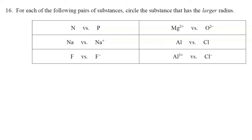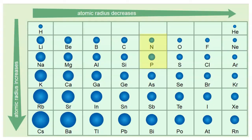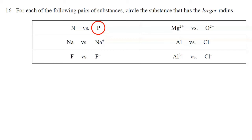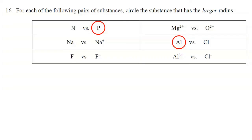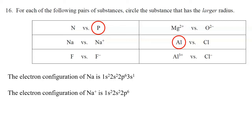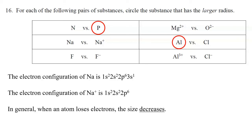Question sixteen asks us to circle the substance with the larger radius in each pair. Nitrogen versus phosphorus: they are in the same group, and atomic radius increases top to bottom, so phosphorus is larger than nitrogen. Aluminum versus chlorine: they are in the same period, and atomic radius decreases left to right, so aluminum is larger than chlorine. Sodium versus Na⁺: the electron configuration of sodium has 11 electrons (1s²2s²2p⁶3s¹), but Na⁺ lost an electron and stops at 2p⁶. Na⁺ is smaller, so we circle the atom Na.